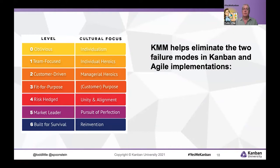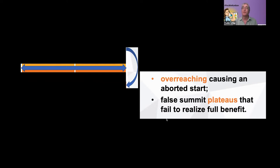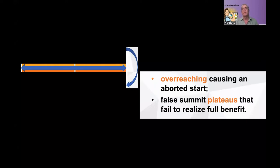The Kanban Maturity Model aims to eliminate two common failure modes in Kanban, Agile, and really almost any type of transformation. The first is overreaching: trying to do too much, where the organization isn't ready and it results in an aborted start. The second is a false summit plateau — getting to a certain point, realizing some benefit, and feeling like that's good enough, when in fact there is significantly more benefit available to the organization or team.